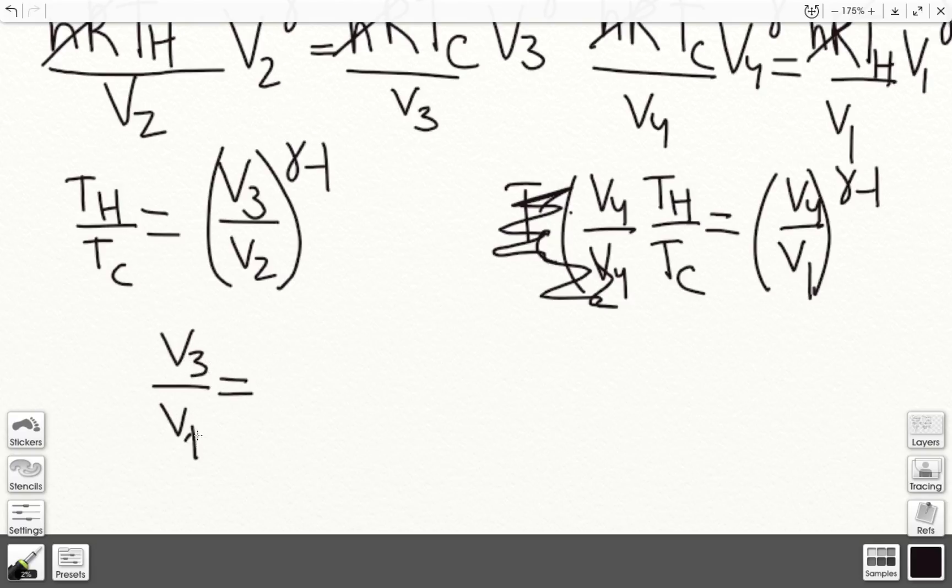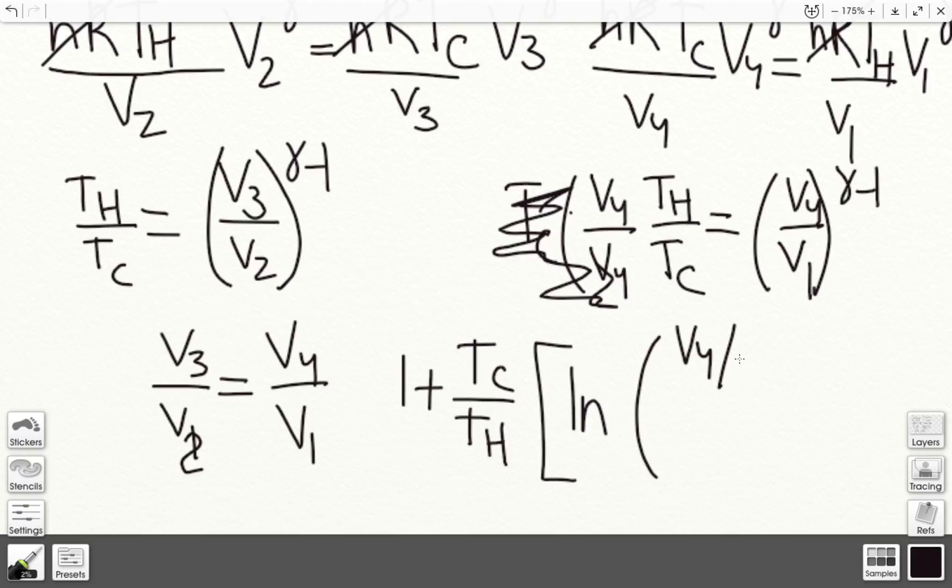So in my expression from the last slide, I had 1 plus Tc over Th ln of v4 over v3 and v2 over v1.